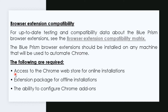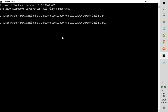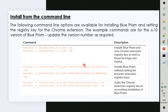The Blue Prism browser extension should be installed on any machine that will be used to automate Chrome. There are a lot of methods to install the extensions — we will discuss all of them. The first one is install from the command line. There are some commands to install the extensions. Just put these commands in the command prompt and hit Enter. You can pause the video and note down these commands.